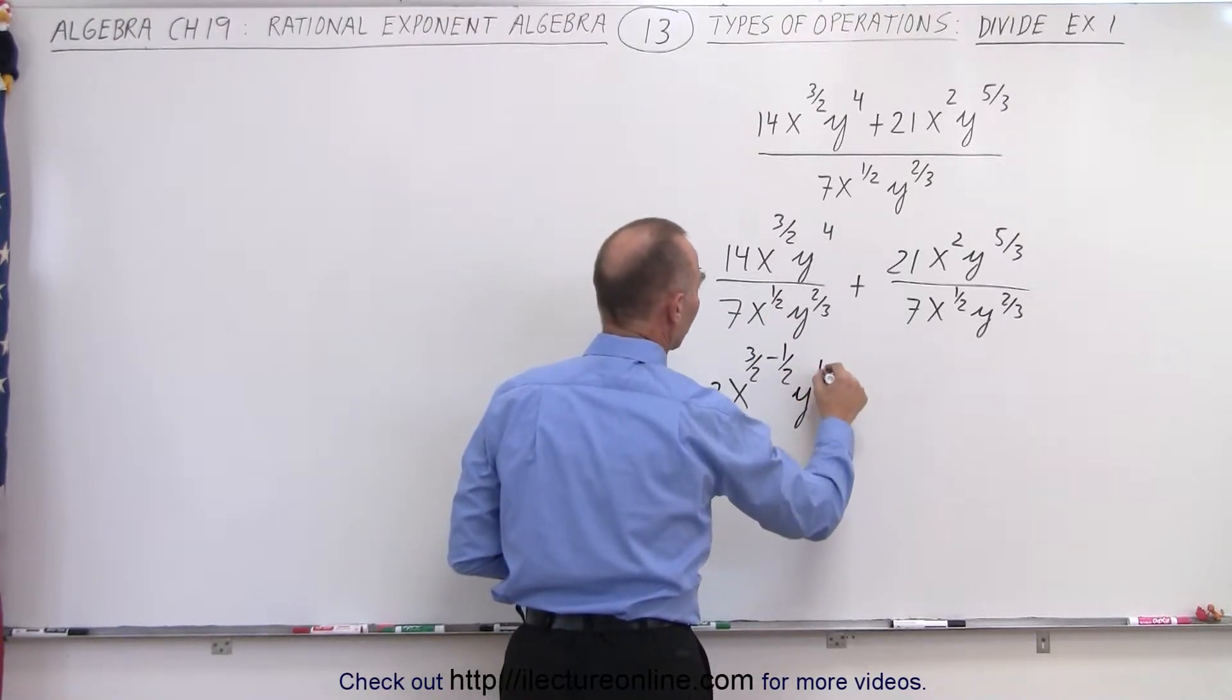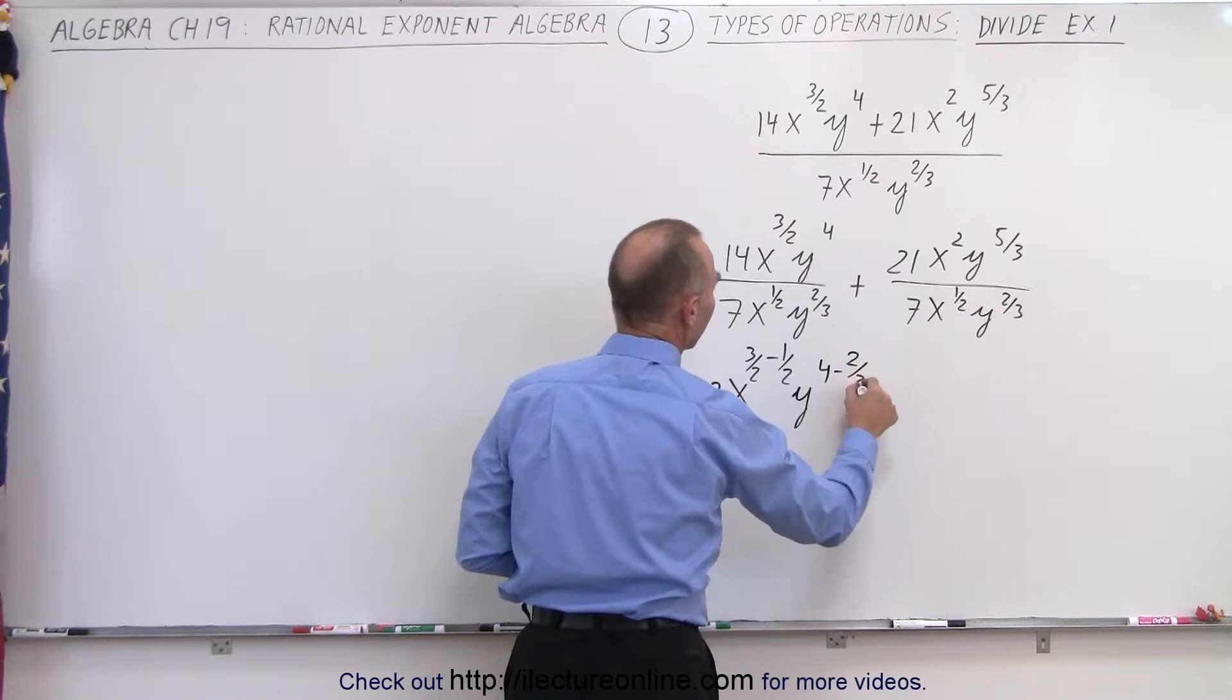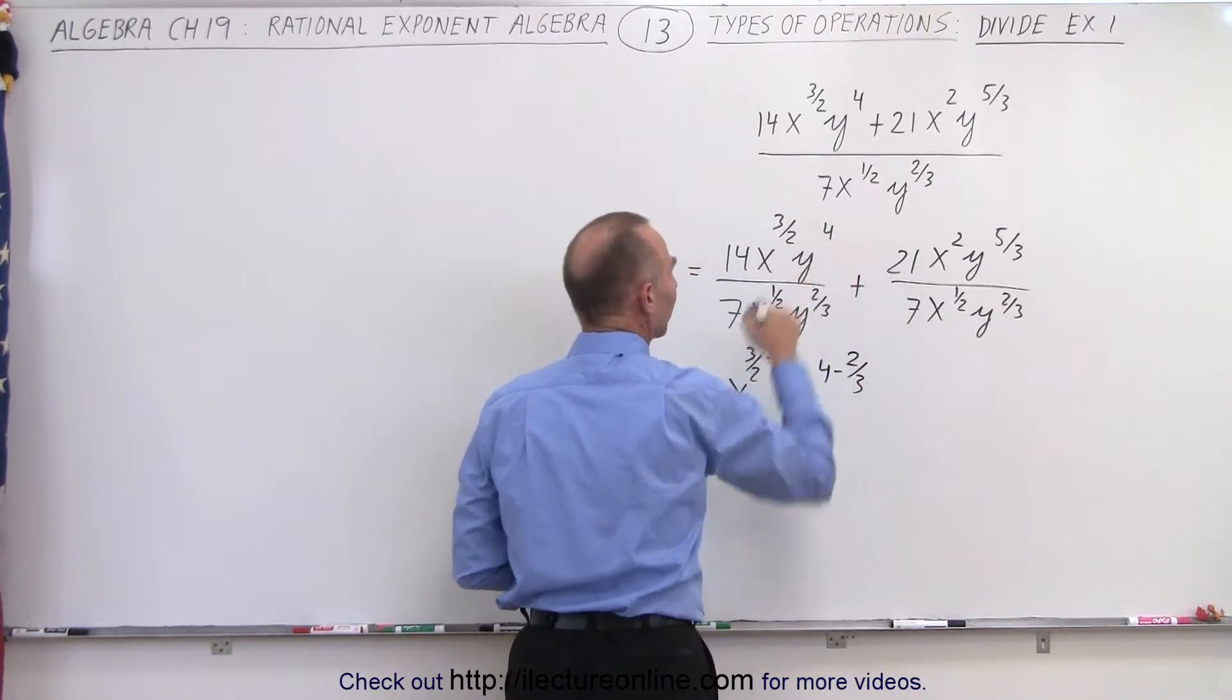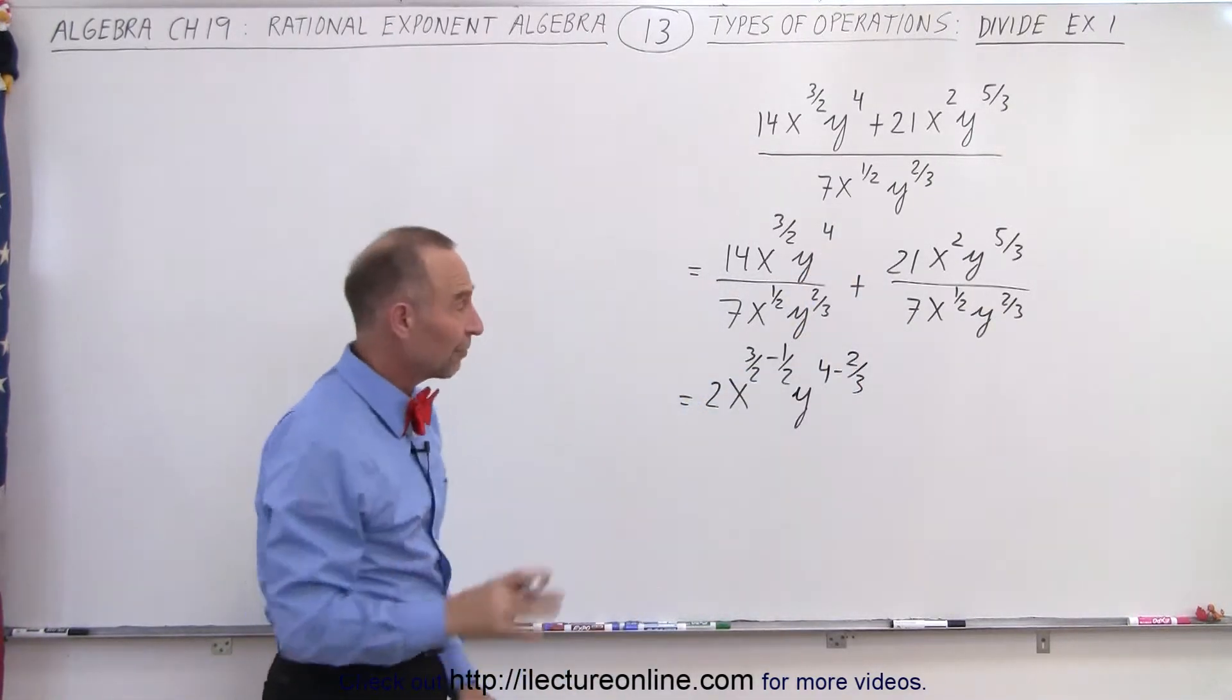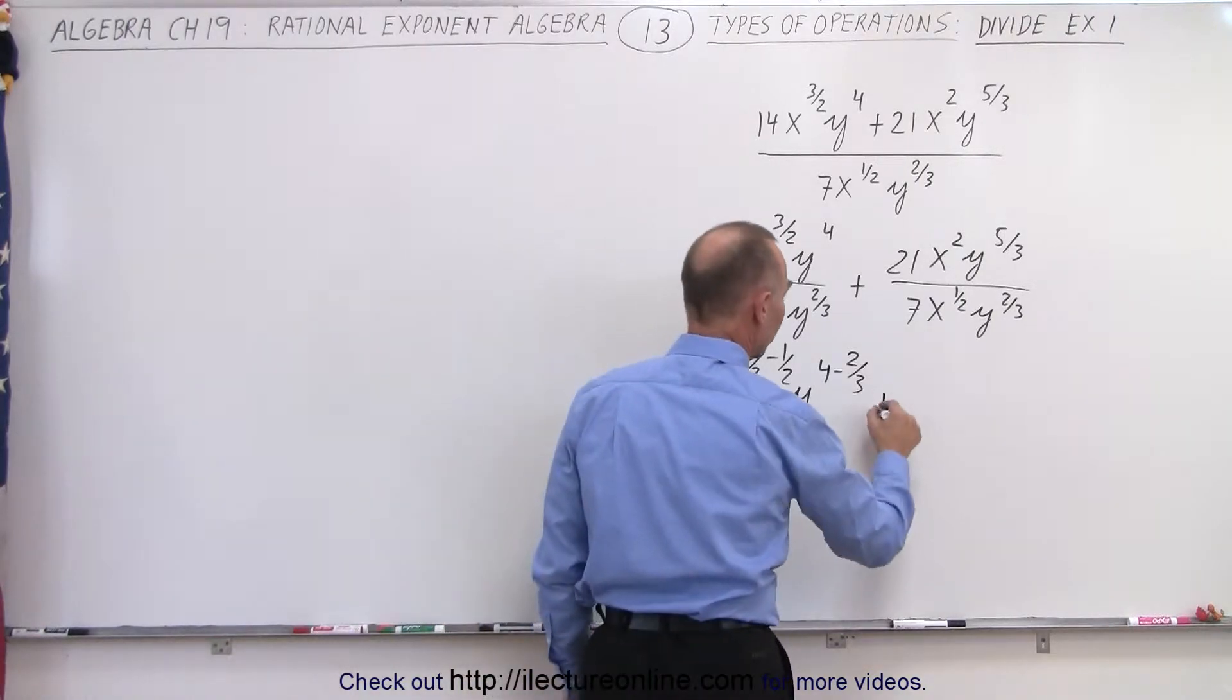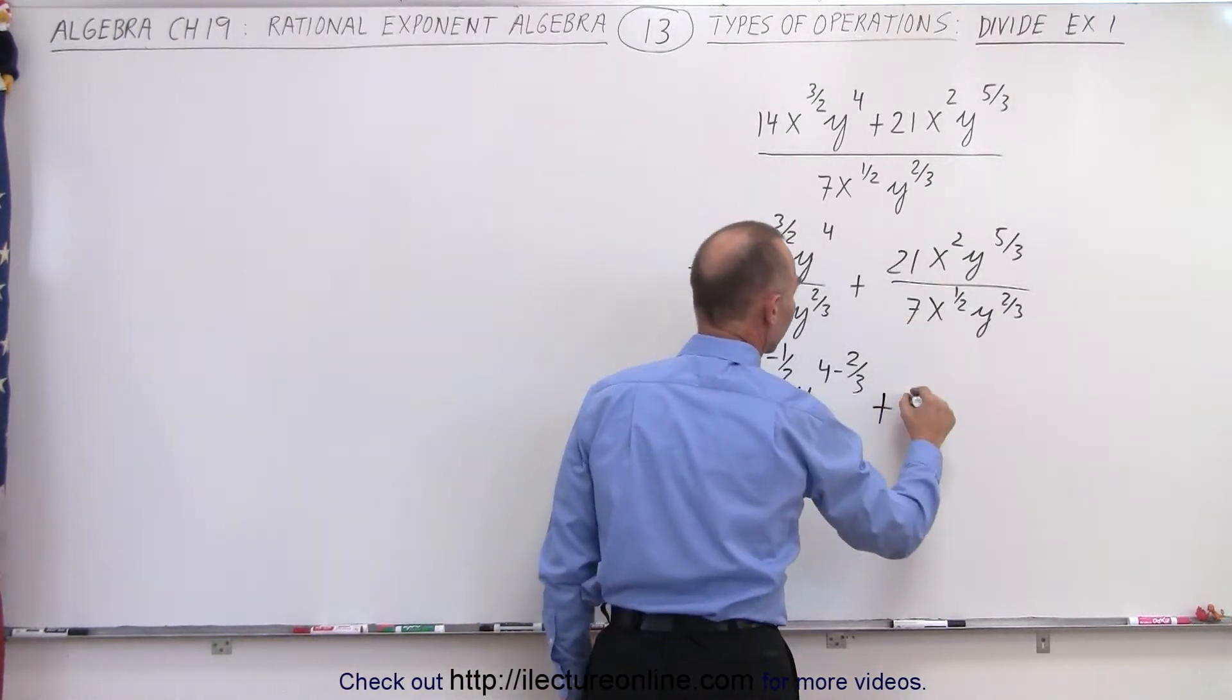So then we have y^4 minus 2/3. Again, you subtract this exponent from that exponent. We do the same for the second fraction, so this becomes plus 21 divided by 7, which is 3.